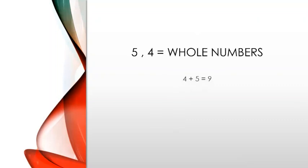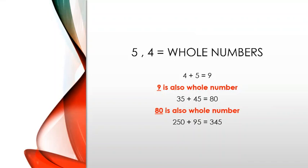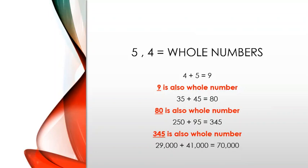Five and four are whole numbers. Four plus five is equal to nine, and nine is also a whole number itself. 35 plus 45 is equal to 80; both 35 and 45 are whole numbers and 80 is a whole number itself. Similarly, 250 plus 95 is equal to 345, so all three numbers are also whole numbers.